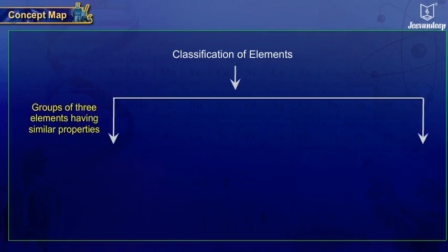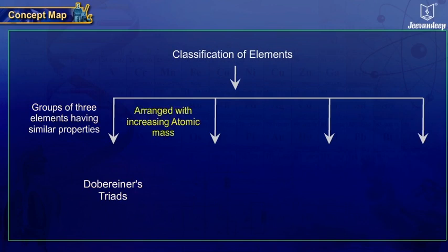Döbereiner found some groups of three elements which showed similar properties. These groups of three were called Döbereiner's triads. After the failure of Döbereiner's triads, Newlands made an attempt to classify elements by arranging them in an increasing order of their atomic masses. This classification was called Newlands octaves.